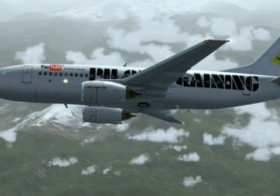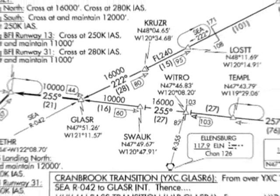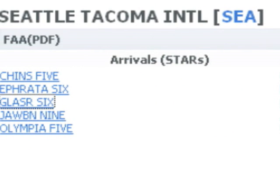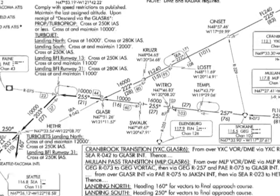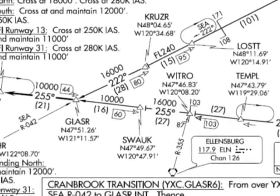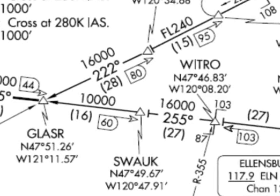Tackling the SID was the easy part. The STAR in almost all cases is more difficult because it contains a lot more information. Back at AeroPlanner we know what STAR to use because by now we can pick it out of our flight plan. In this case it's Glasser 6. When I first saw a chart like this I almost fell out of my chair — no way am I gonna be able to learn all this. However, once we break the chart up into little parts you will soon see that it's as easy as cake.